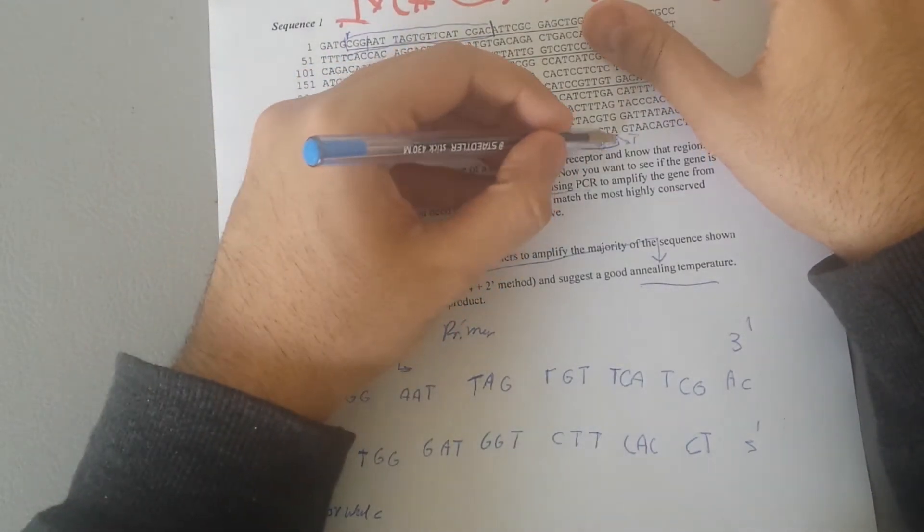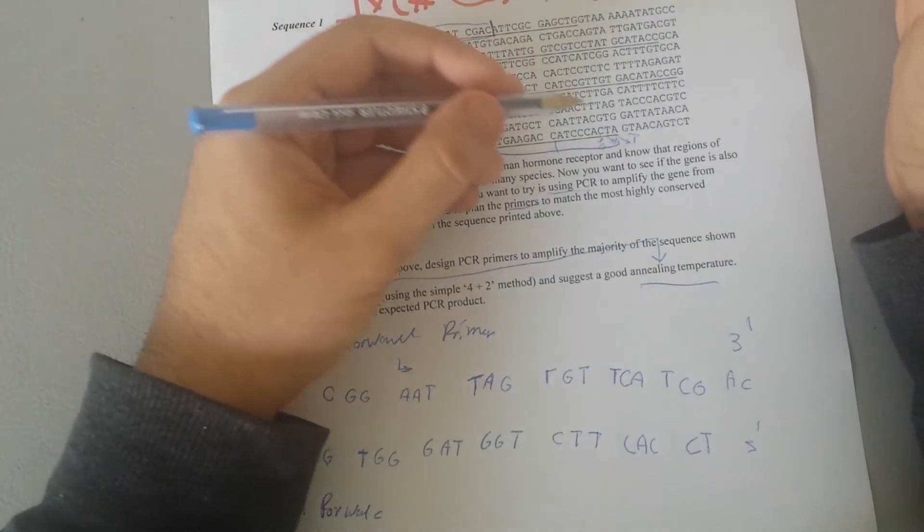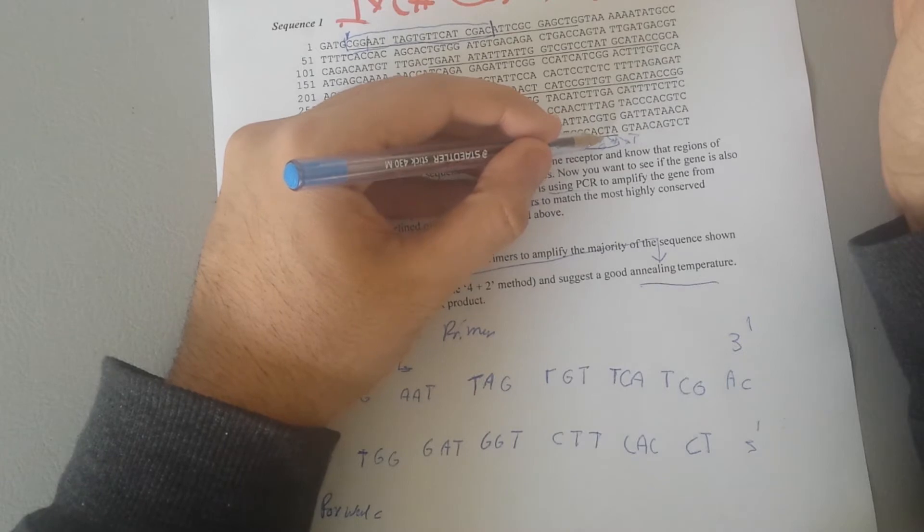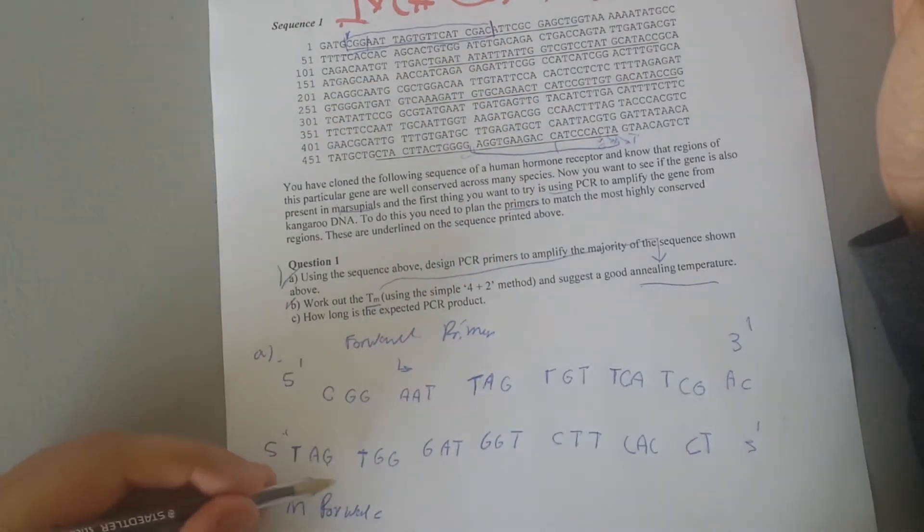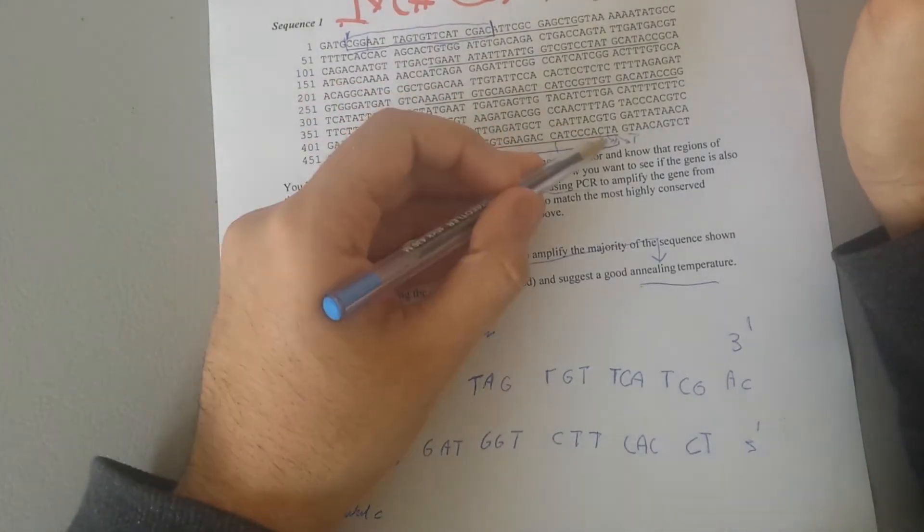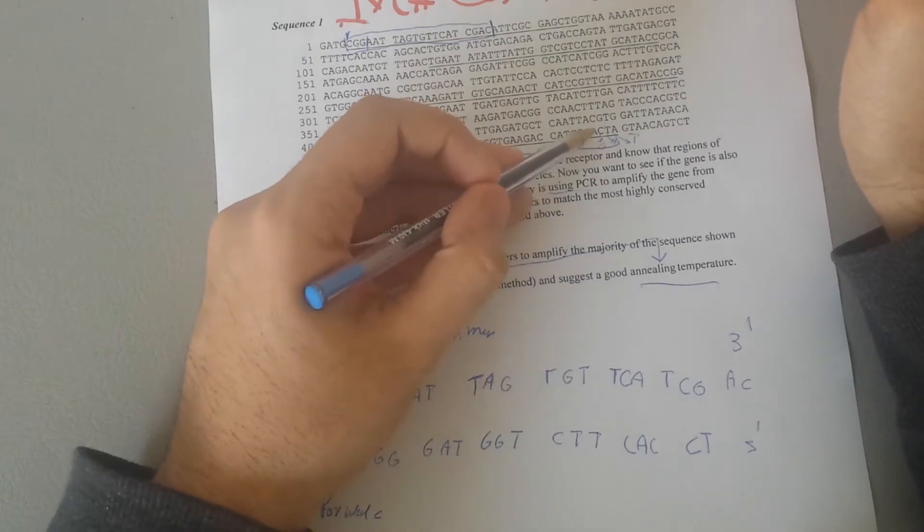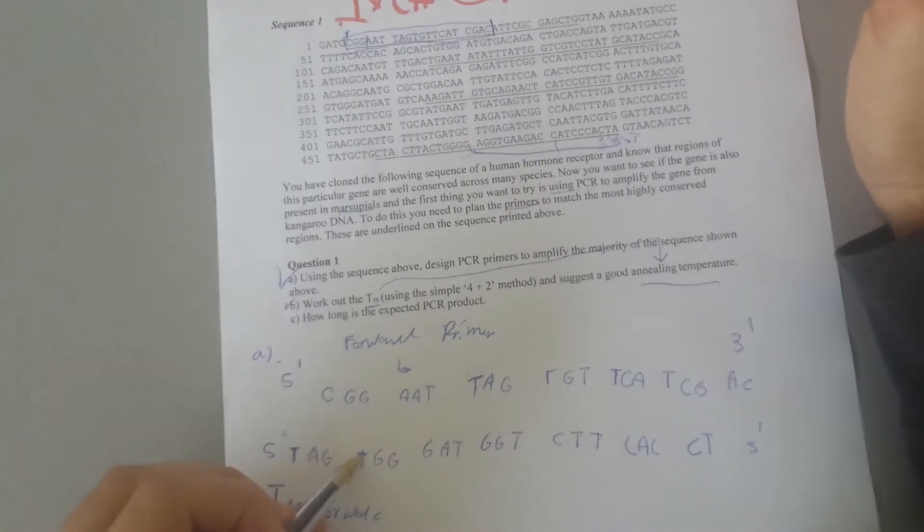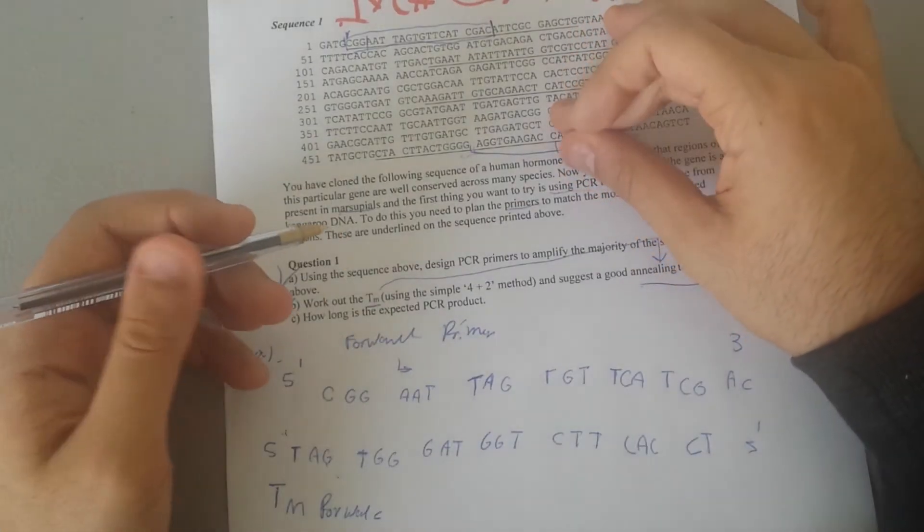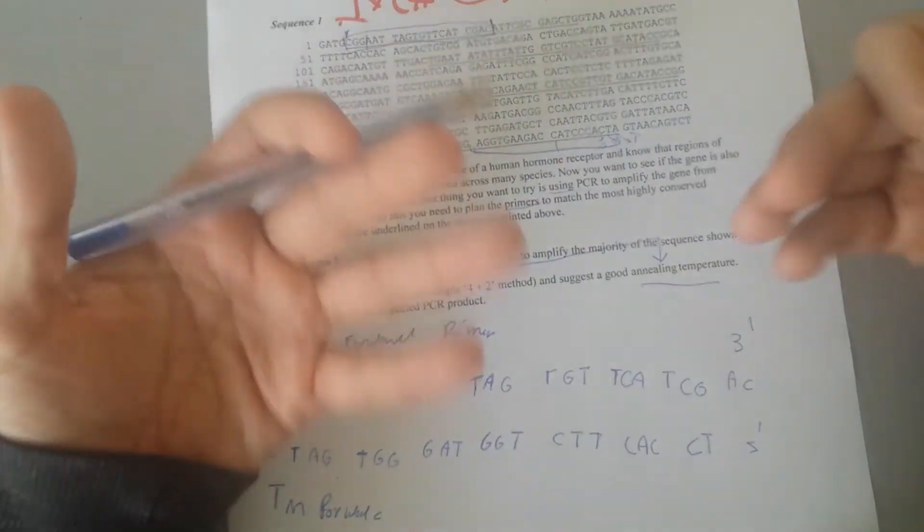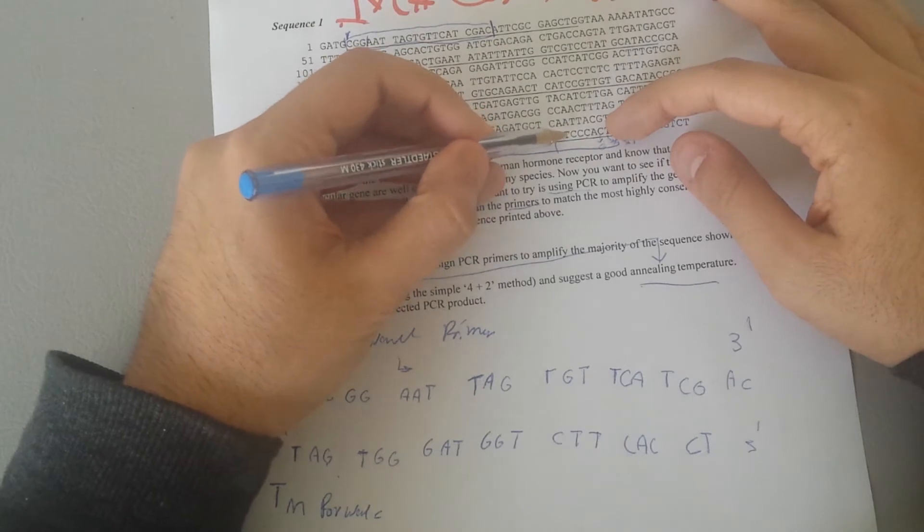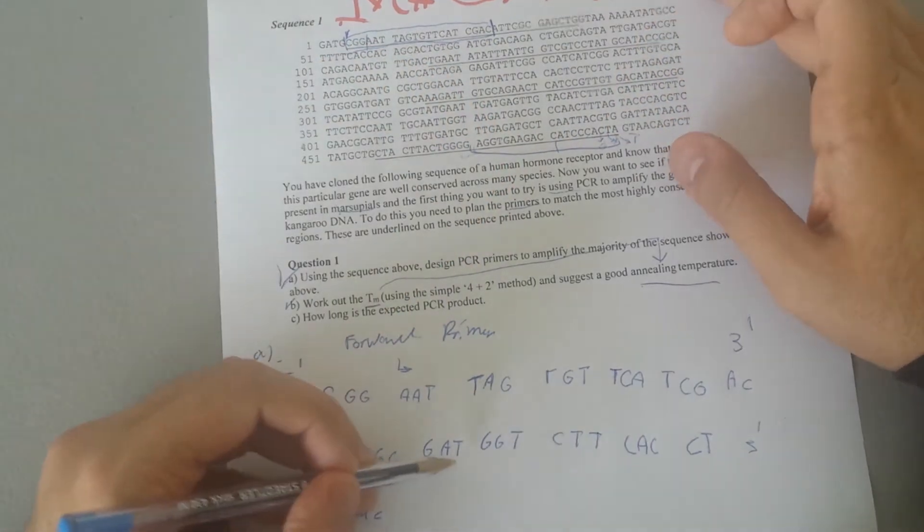I picked my primer from here to there for the reverse strand. Reverse complementary essentially means that if you have ATC it will be TAG. If it's ACC it will be TGG. It's a bit tricky at first, I was really annoyed by this, but once you do many examples you get used to it. So you can for example go with that, or it can be CTAGATGAT.